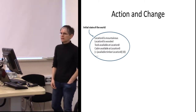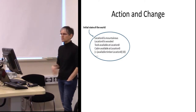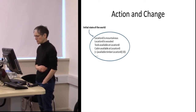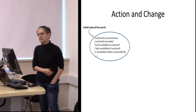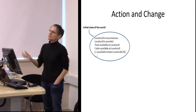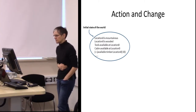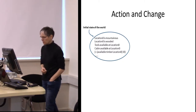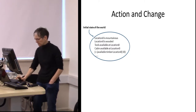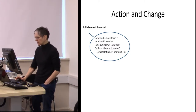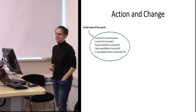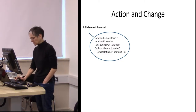We have formal representations and logics of action and change. In automated planning, a state is represented as the set of facts that are true and the metric quantities available, using whatever units and level of representation is desired. For example, here we have that location zero — the name of the place where they start off — is mountainous and wooded, that there are tools available at location zero, a cabin available, and a certain amount of timber available — 10 units.